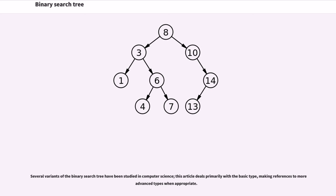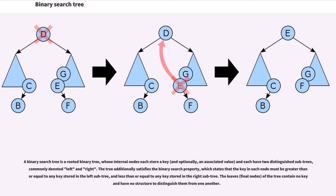A binary search tree is a rooted binary tree whose internal nodes each store a key and optionally an associated value and each have two distinguished subtrees, commonly denoted left and right. The tree additionally satisfies the binary search property, which states that the key in each node must be greater than or equal to any key stored in the left subtree and less than or equal to any key stored in the right subtree.